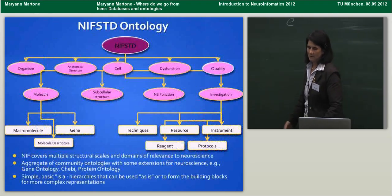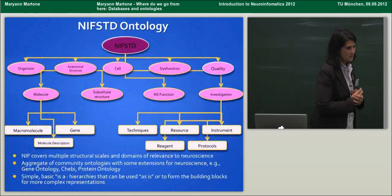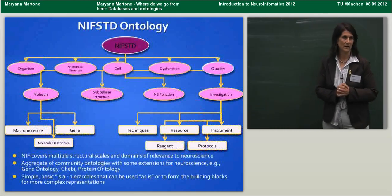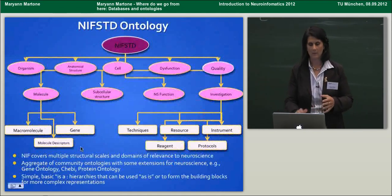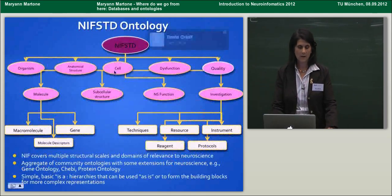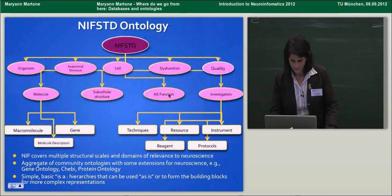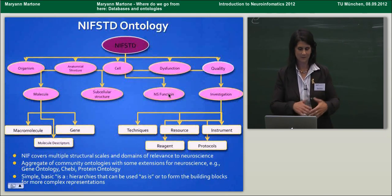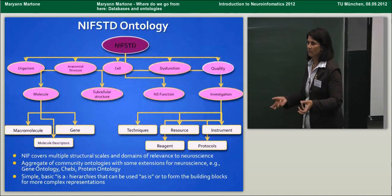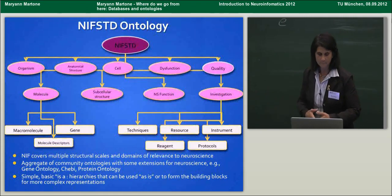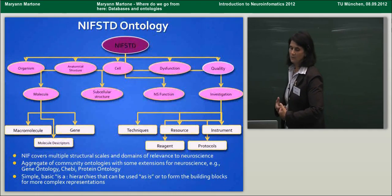Let's look a little more into ontologies — what are they, how do we construct them, how do we use them, and how do we navigate what I call the ontology wars? NIF has assembled a very large ontology for neuroscience called the NIF Standard Ontology. It's a set of modules, each covering a single domain or level of the nervous system — organisms, anatomical structures, cells, dysfunctions, nervous system functions, subcellular structures. We aggregate these from many ontologies already in development by the community. NIF pulls them in, organizes them, and unifies them. It's a simple ontology constructed to facilitate its reuse as building blocks.